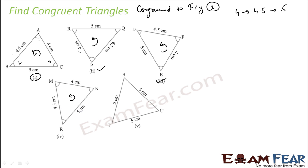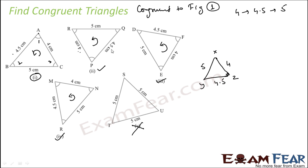This one is all different — there is no 4, 4.5, and 5, so this is not congruent at all. For triangle XYZ, even though it has three sides equal to 4, 4.5, and 5, it is not congruent to triangle ABC, because starting from 4 and going anticlockwise, the next should be 4.5, but it is 5. So it is not congruent.